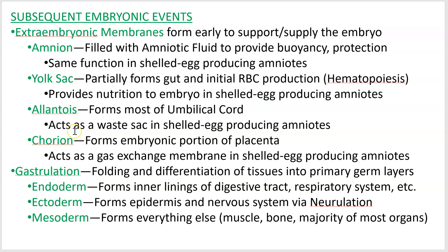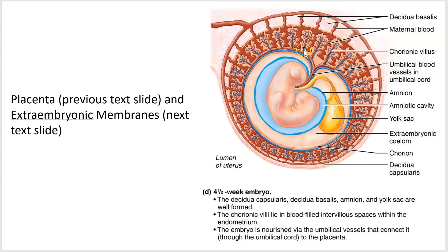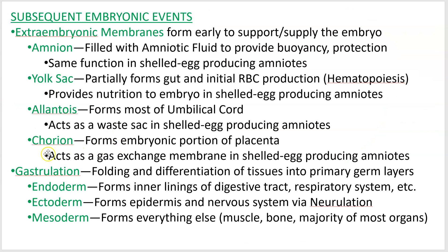Next is the chorion, which for us forms the embryonic portion of the placenta, as we've already discussed. All of these extensions in here are the chorion of the embryo. In a chicken, it performs as a gas exchange membrane. If you've ever done the Halloween trick where you put an egg in vinegar overnight, it dissolves the calcium-based shell and leaves an egg-shaped membrane. That thin membrane you struggle to peel off a hard-boiled egg is the chorion. Chicken eggs need oxygen and need to get rid of CO2, and it passes through that membrane. For us, it serves the same function but directly with the mother.